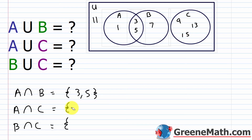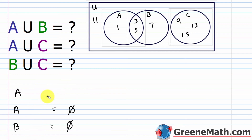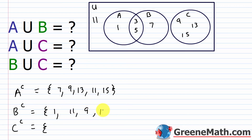What about A intersect C? There is no overlap — those two sets are called disjoint sets; they have no elements in common. So A intersect C equals the null or empty set. The same goes for B intersect C — also the null or empty set. For complements: A complement is 7, 9, 13, 11, and 15. B complement is 1, 11, 9, 13, and 15. C complement is 1, 3, 5, 7, and 11.